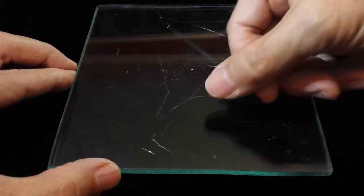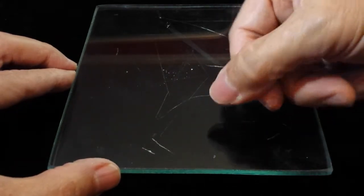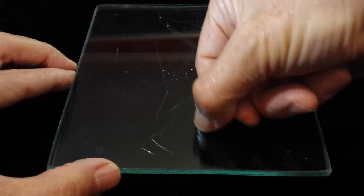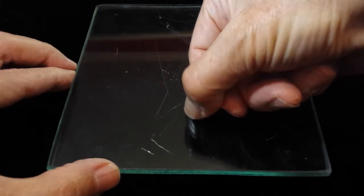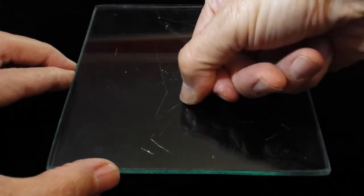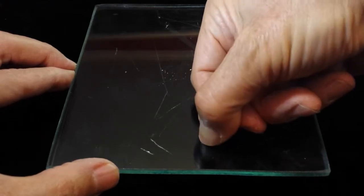You might expect that a fingernail would be softer than a glass plate, which has a Mohs hardness of about five and a half. And it looks like you would be correct, at least with this fingernail.